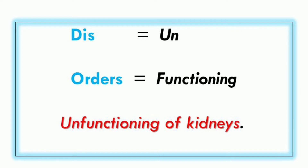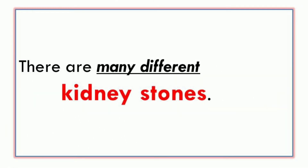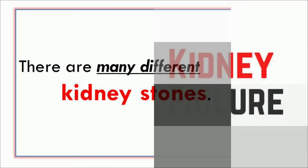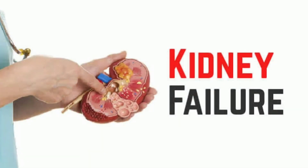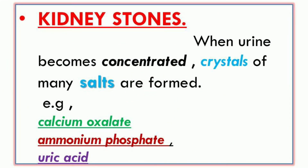Dear students, I will explain the words used in this topic. What is meant by 'Disorder'? 'Dis' means 'un' and 'order' means function — so disorder means the unfunctioning of the kidney. That is called a Disorder of the Kidney. So let's start.